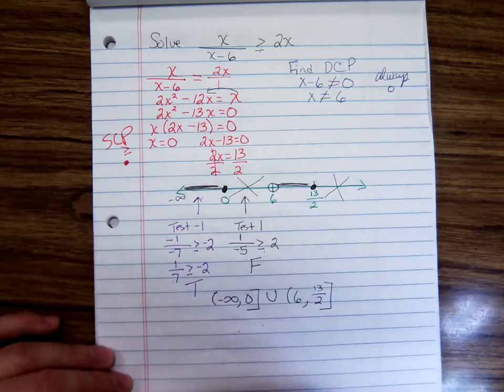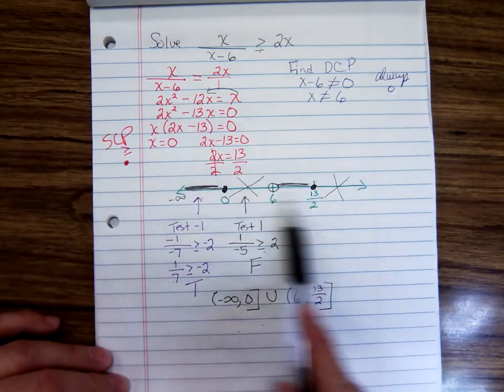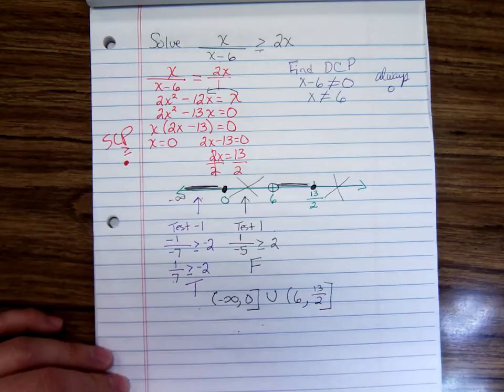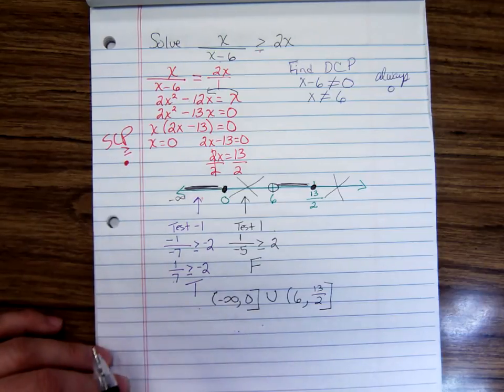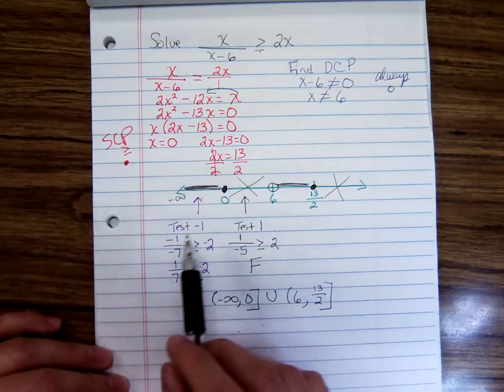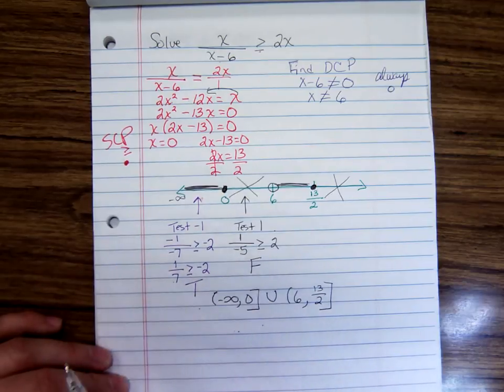Then find the denominator or domain cut points by saying denominator can't be 0. Always an open circle. Plot the numbers. Test the interval. True statements are the ones you'll be shading. And the false statements are the ones that aren't part of the solution.